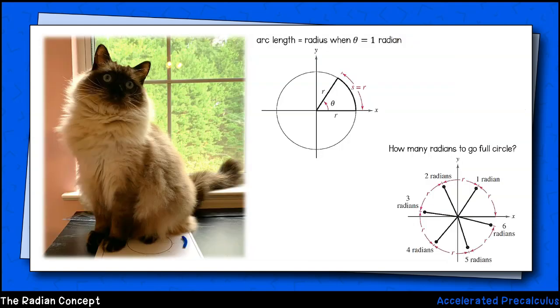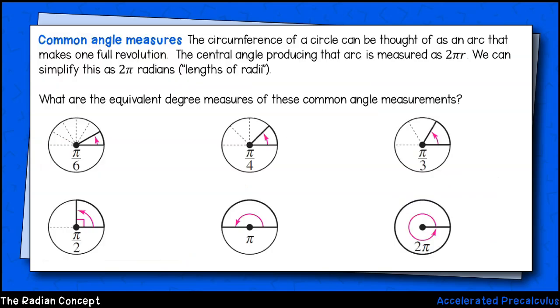So to summarize, when the angle theta is one radian, the arc intercepted by that angle will equal one radius length. Since the circumference of a circle is 2πr and a radian is one radius length, there will be 2π radians in one full rotation.